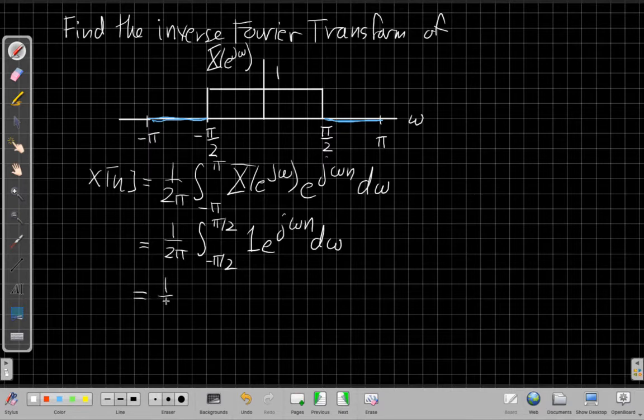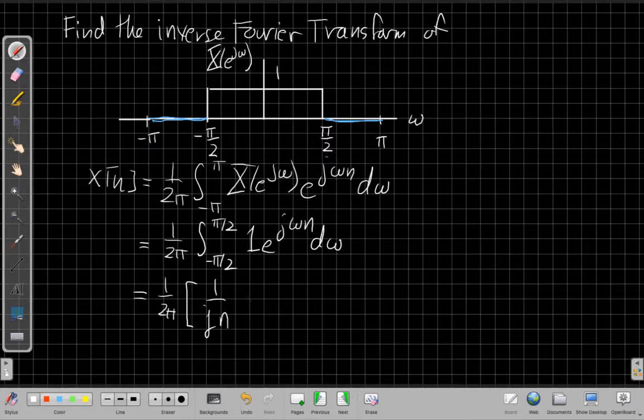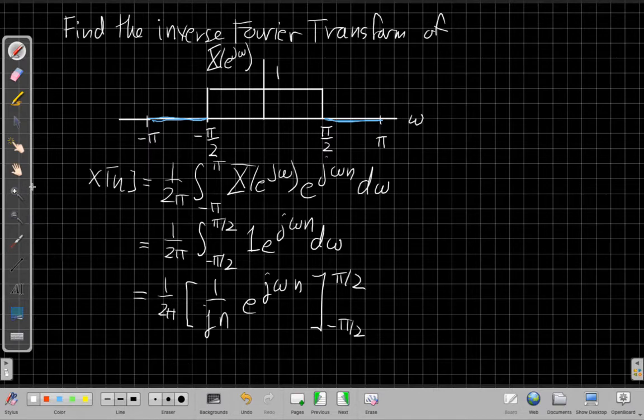And so this is a convenient integral, right? An integral of e to the j omega n d omega becomes 1 over j n from the chain rule. I need to bring that down from the denominator. 1 over j n times e to the j omega n. And then it's a definite integral, so I'm evaluating it at pi over 2 and minus pi over 2.